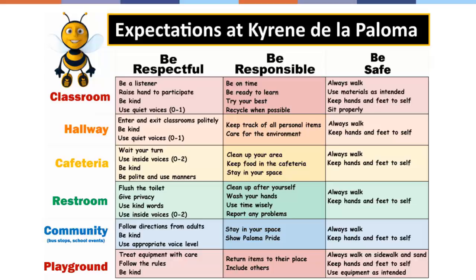If you look within each square on the matrix, you'll see that respectful, responsible, and safe are further defined within the classroom, hallway, and other locations. The definitions of each one of the expected behaviors are stated in a positive way and are behavioral in the sense that they can be observed or measured.